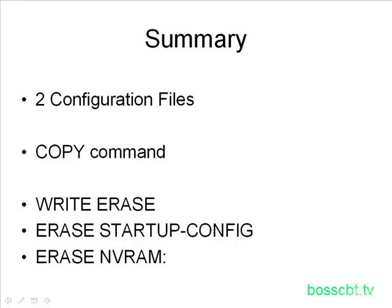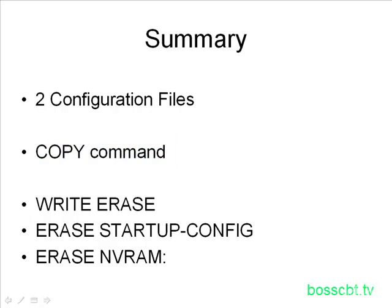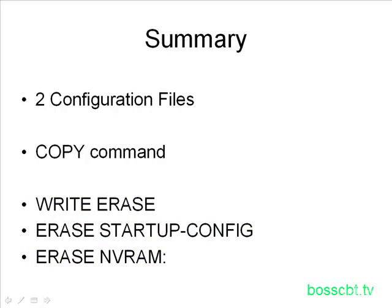To summarize: there are two configuration files — the startup config and the running config. The startup config is permanent; the running config is a copy that runs until the switch is reloaded. Any changes made in configuration mode are applied directly to the running config. For file management, the copy command uses a source and destination parameter — you can back up files, save your running config to startup, or copy to and from a TFTP server. Three commands exist to erase the startup config, but be careful — if you erase it without a backup, the switch will enter setup mode on reload.